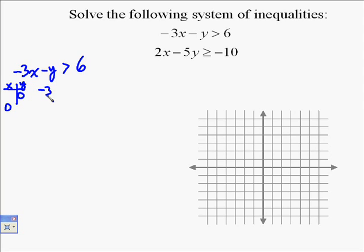Find the x-intercept first by putting in 0 for y. Once that gives me negative 3x minus 0 is greater than 6, which at 0 just doesn't mean anything, so it's negative 3x greater than 6. So I just need to divide both sides by negative 3, and you get x is negative 2. So the x-intercept is negative 2.